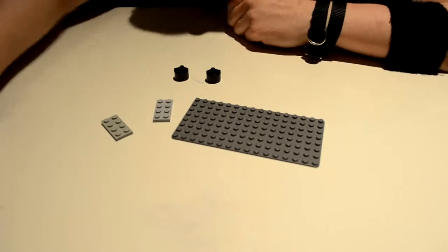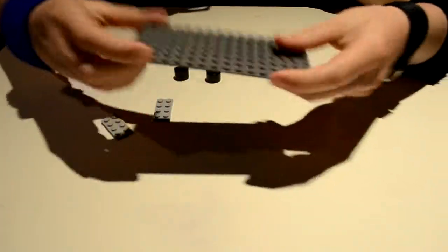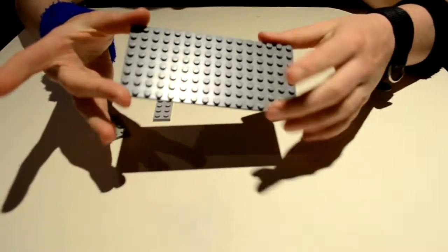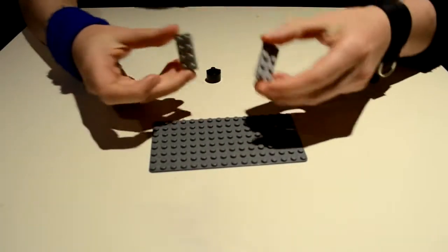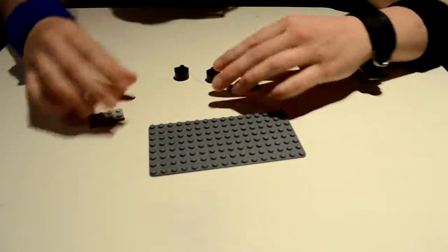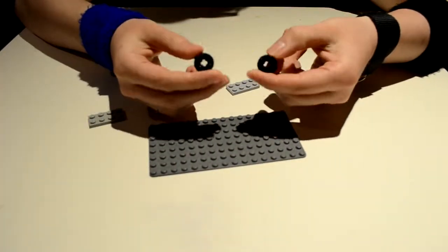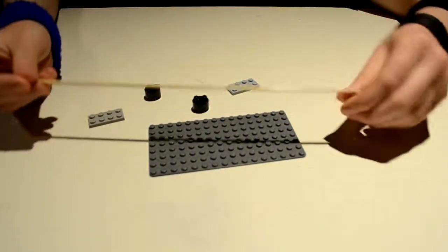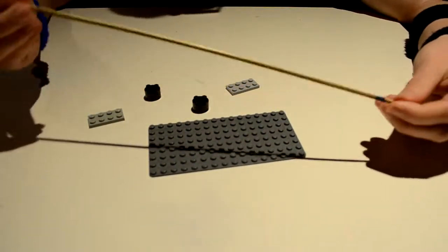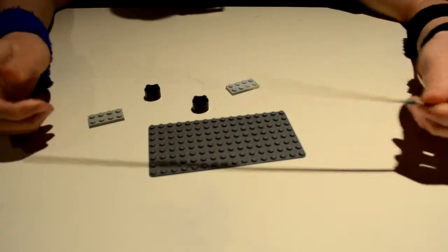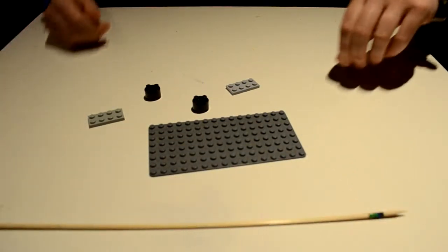Alright, so let's start with this DNA thing. What you want to get is a base, obviously, and two of these because it'll make it look pretty. Two of these things with the holes in them. And here's the twist, a bamboo skewer because pros build with bamboo skewers.